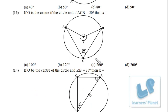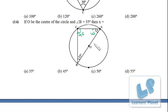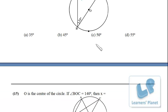O is the center. Angle ACB is 50°, so the angle at center from the same arc is 100°, making the reflex angle 260°. In another figure: O is the center, AB is a diameter, so the angle in the semicircle is 90°. With another angle of 35°, the third angle of the triangle is 180 − 90 − 35 = 55°. It just takes seconds to solve this sort of problem.